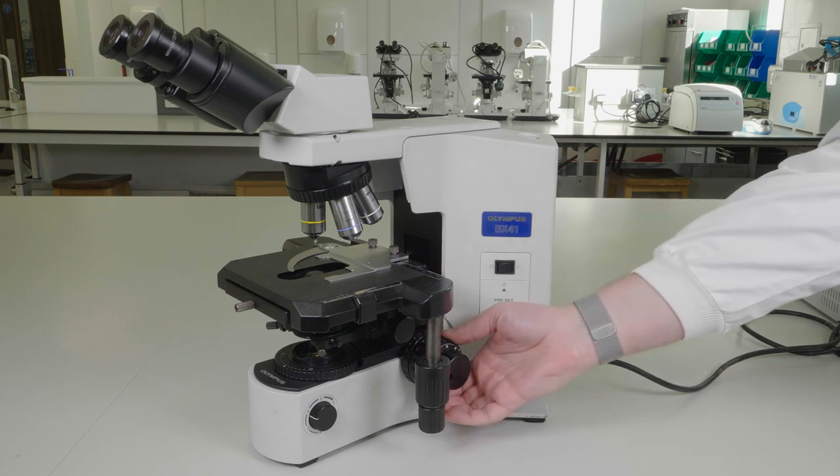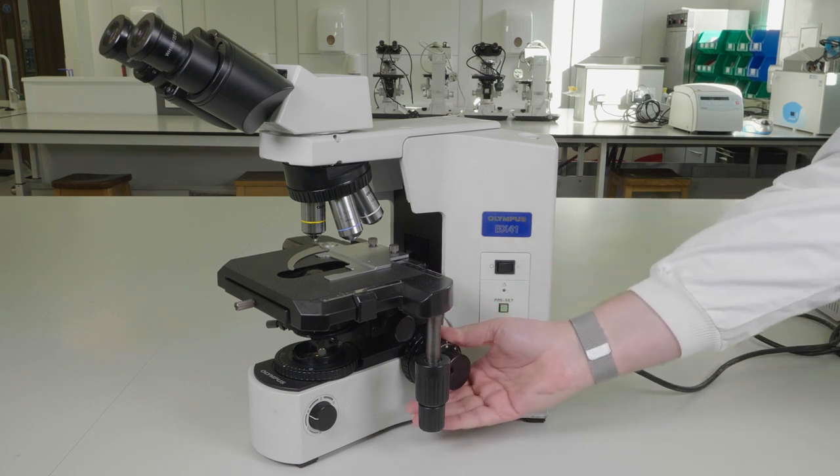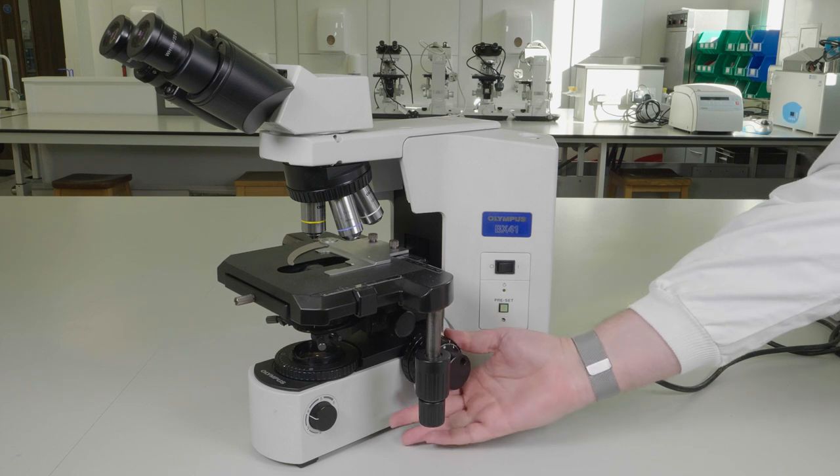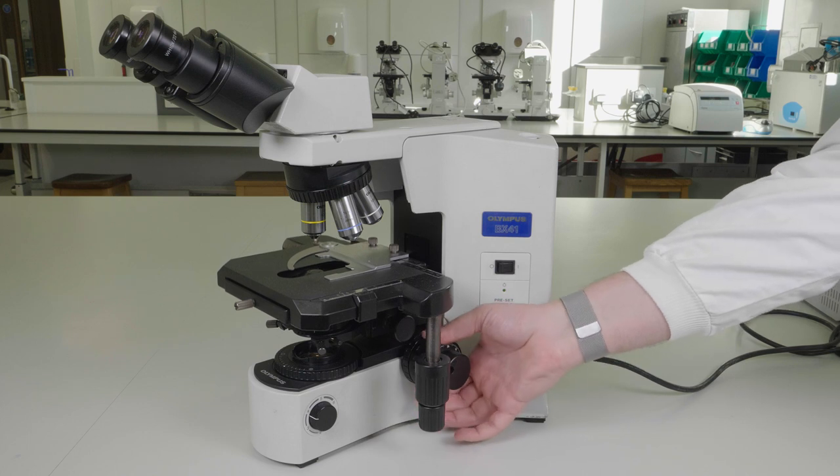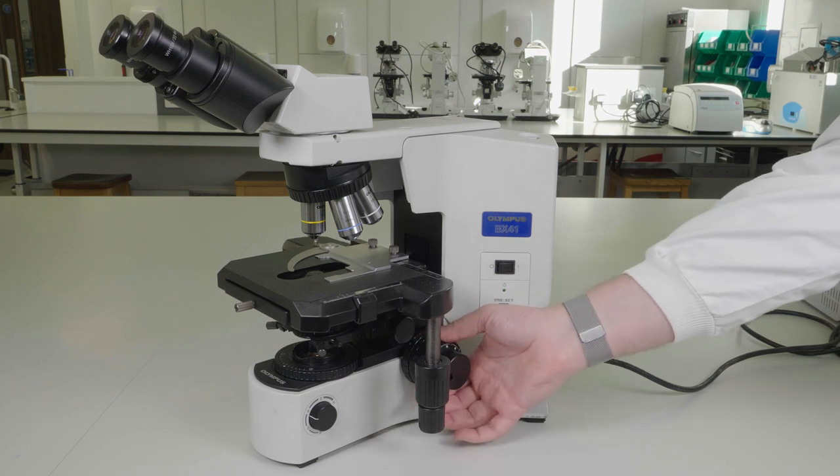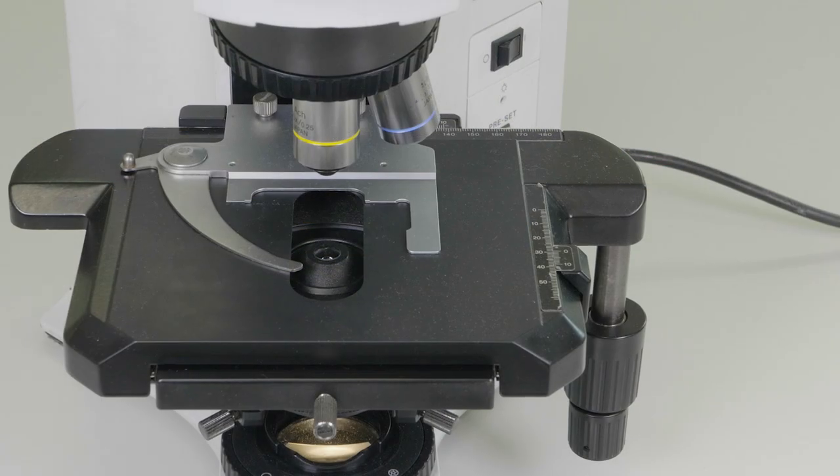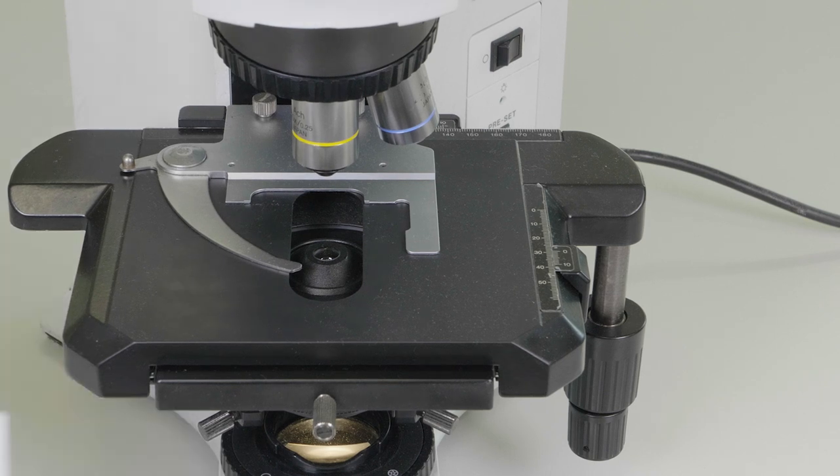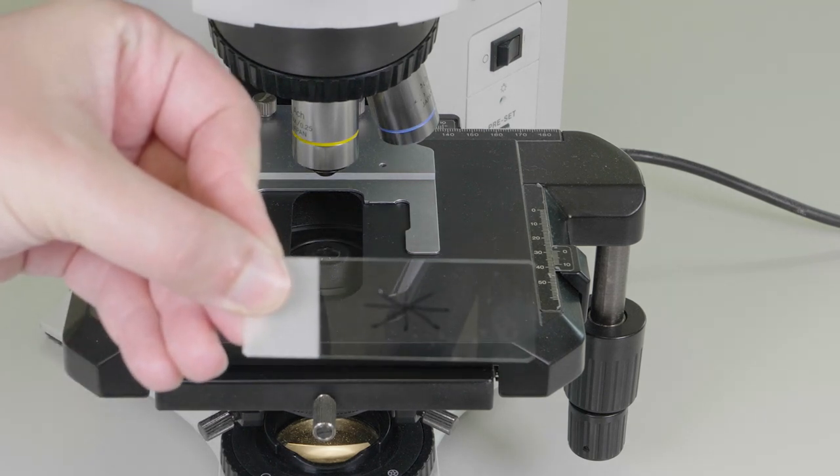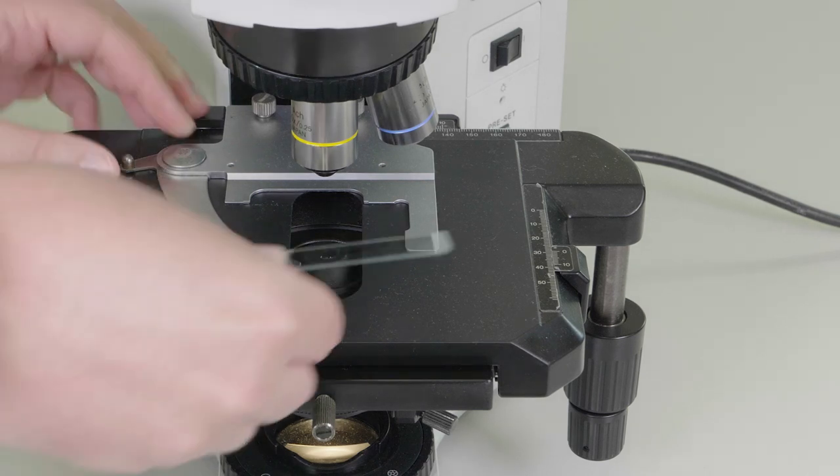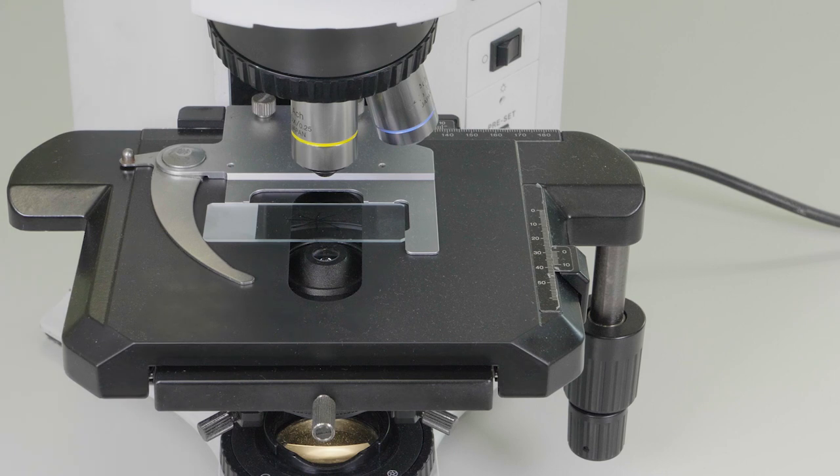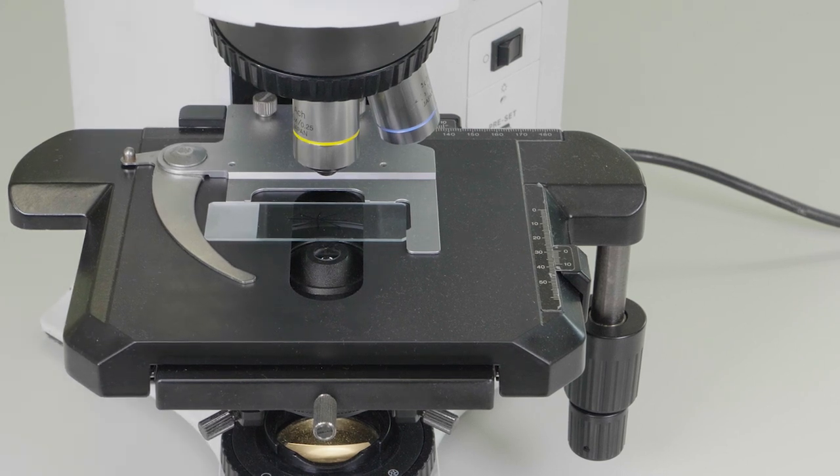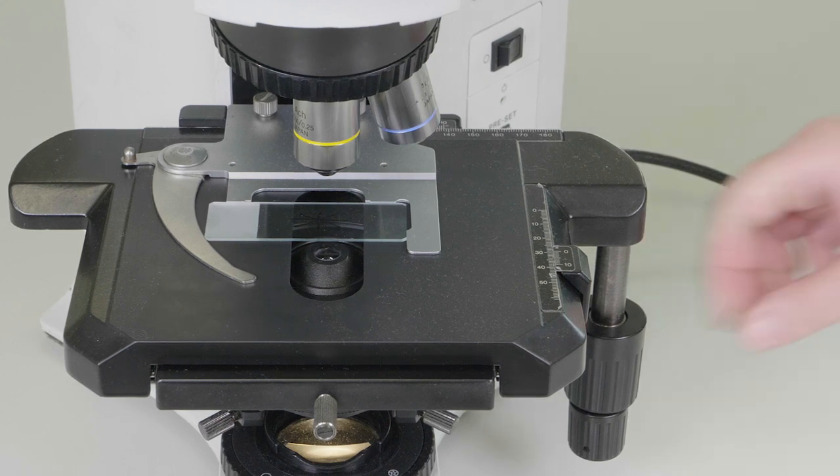Before we continue make sure that the stage is at its lower most position by adjusting the course focus dial. At this point take a glass microscope slide and draw on it with a pen. We will use this to set the focus. Place the slide in the slide holder on the stage and move the slide into the light path using the X and Y controllers on the right hand side of the screen.